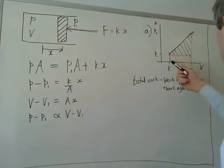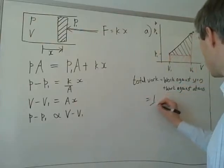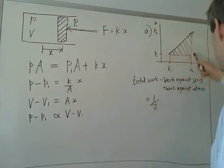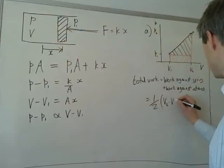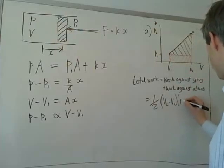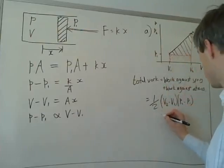And so, the work against the spring is this triangle, and the area of a triangle is half times the base times the height. And the area of the rectangle is simply the base times the height.